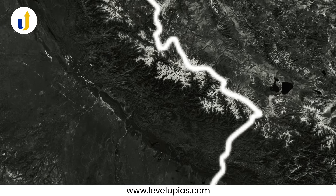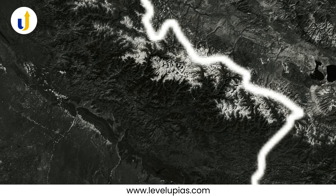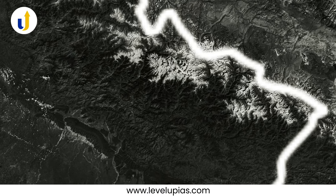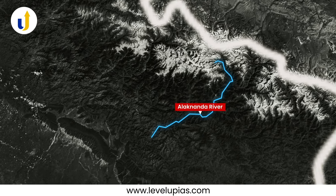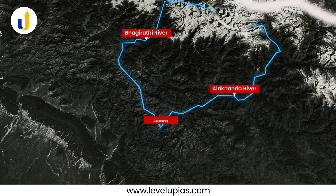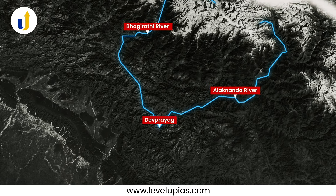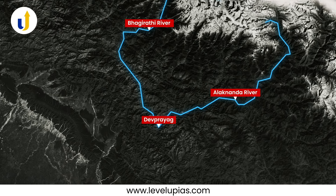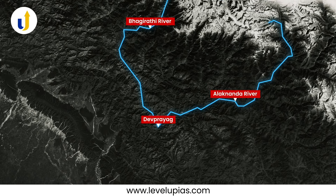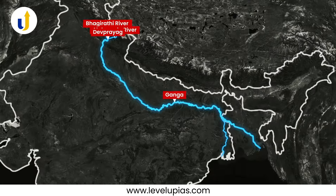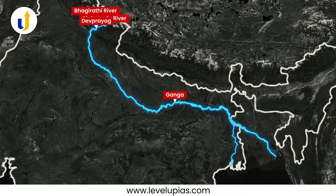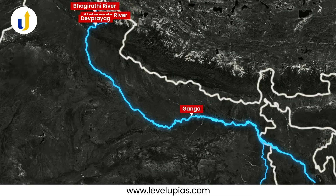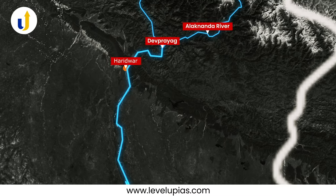The Ganga is formed from two head streams, namely Alaknanda and Bhagirathi. At Dev Prayag, the Bhagirathi meets the Alaknanda and hereafter it is known as Ganga. The Ganga enters the plains at Haridwar.